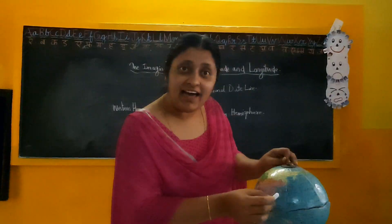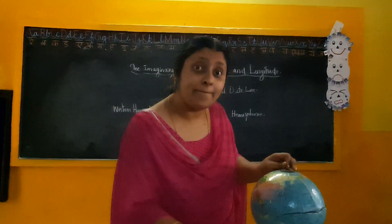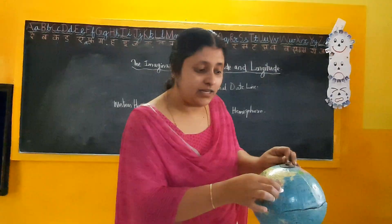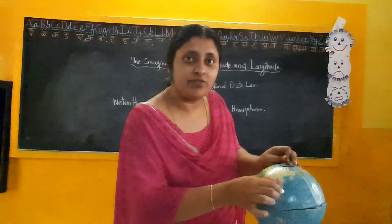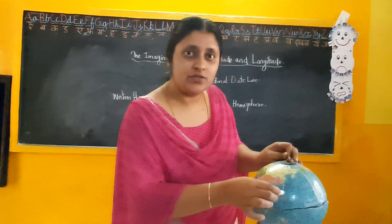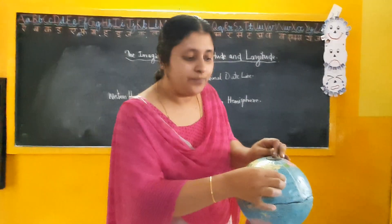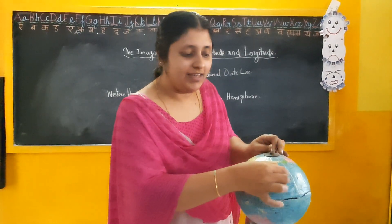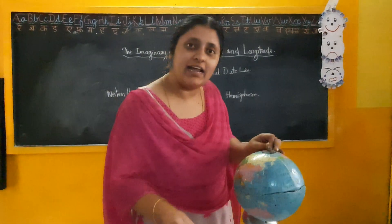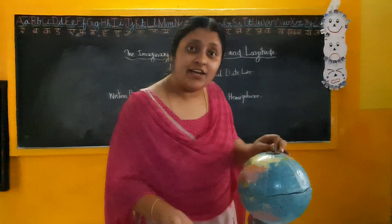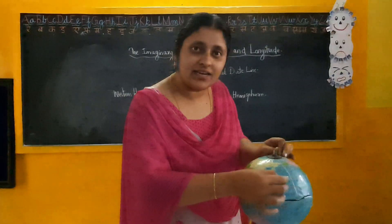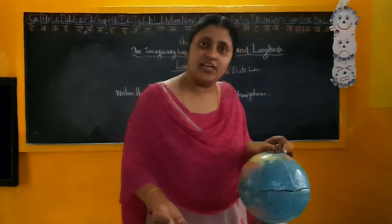Japan is known as the land of the rising sun. Why? Because Japan is situated in the extreme east of the Eastern Hemisphere. That is why they will move firstly, and they will see the rising sun first. That is why that land is known as the land of the rising sun. So, any country that will cross this International Date Line, then their date will change.